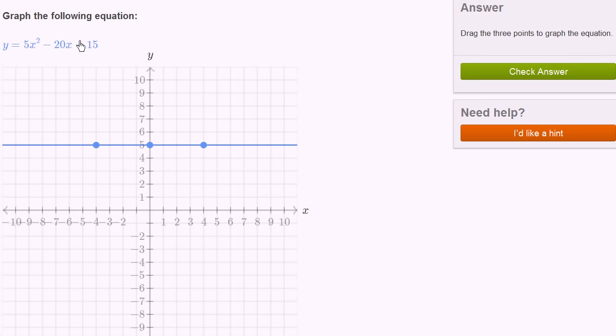We're asked to graph the following equation: y equals 5x squared minus 20x plus 15. So let me get my little scratch pad out. So it's y is equal to 5x squared minus 20x plus 15.